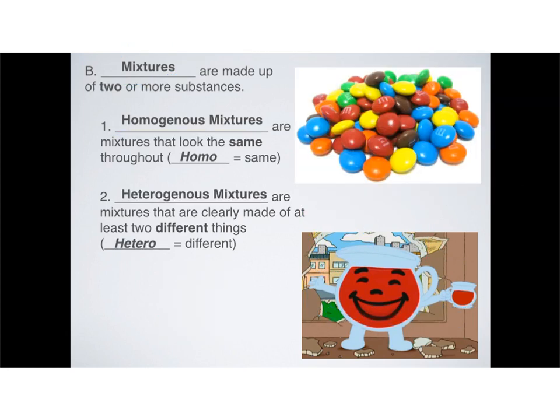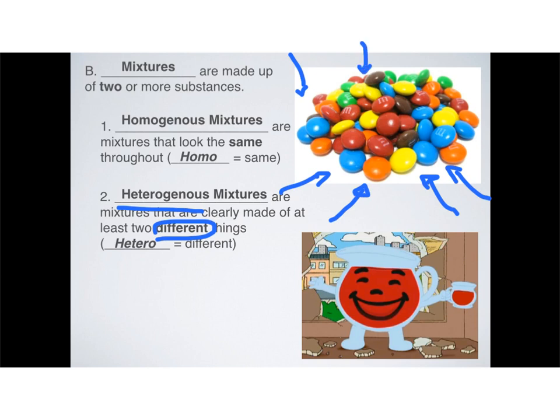The other type of mixture is called a heterogeneous mixture — a mixture that is clearly made up of at least two different things. The word 'hetero' means different. Examples include a bag of M&Ms, trail mix, and sand — you can clearly see there are different pieces and parts. It's literally just a collection of different things, and as with M&Ms, you can clearly see they're not bonded to each other.